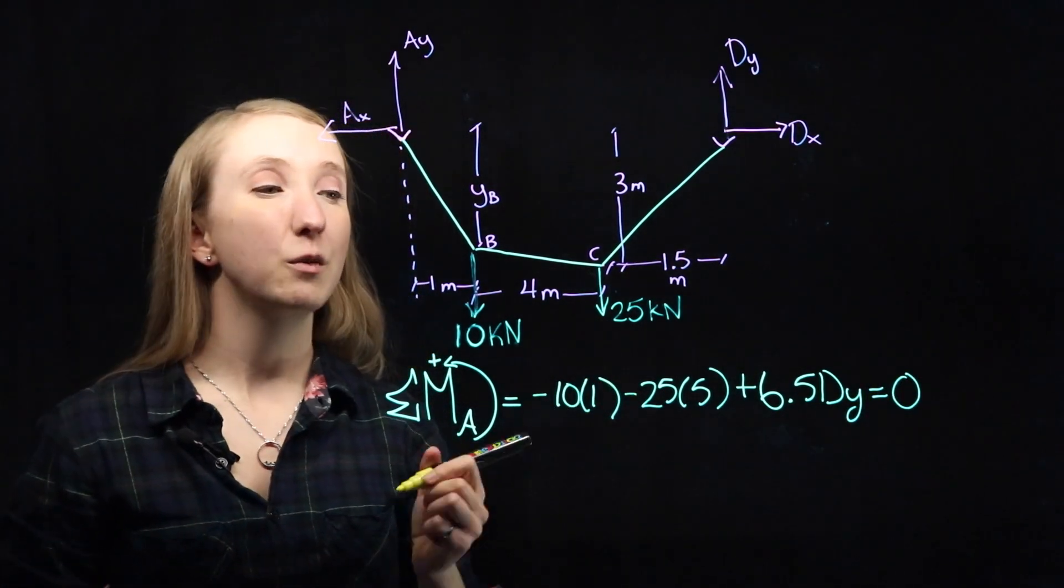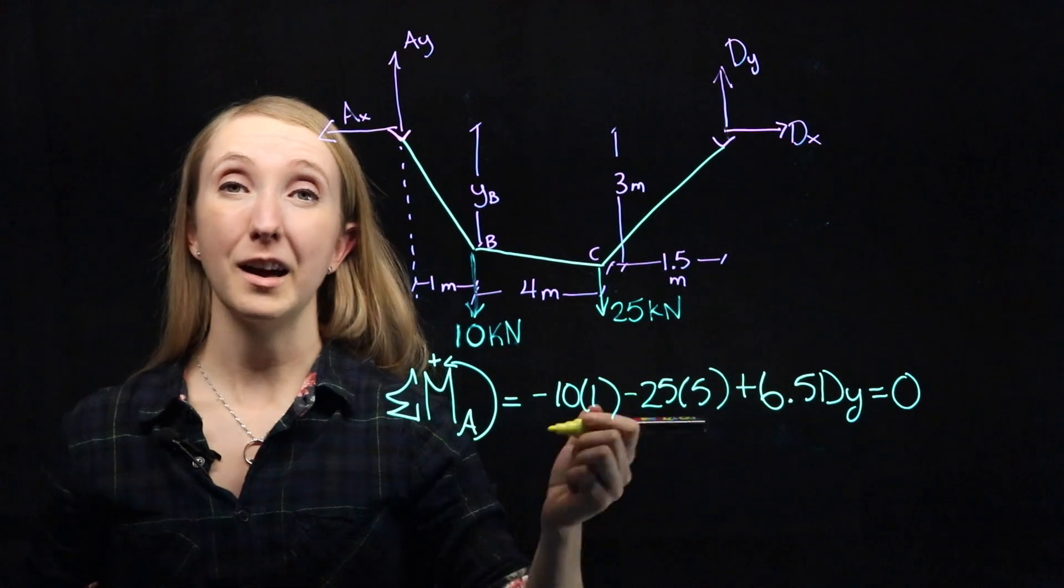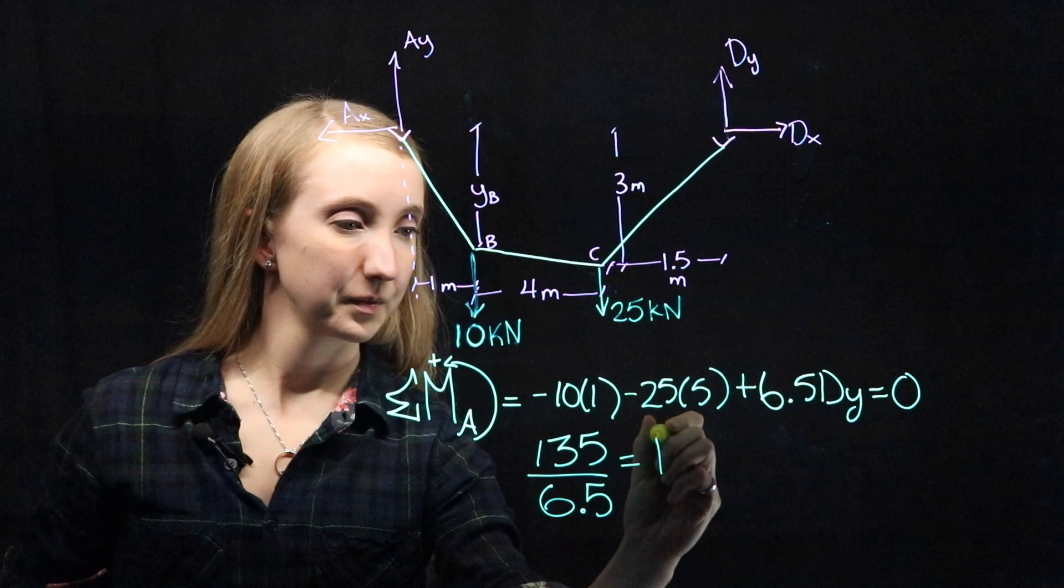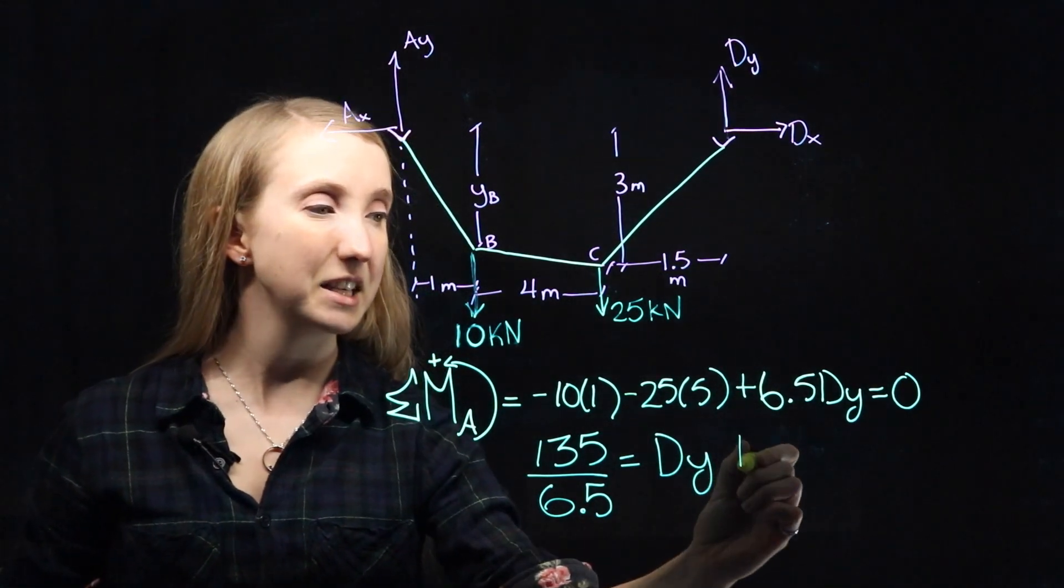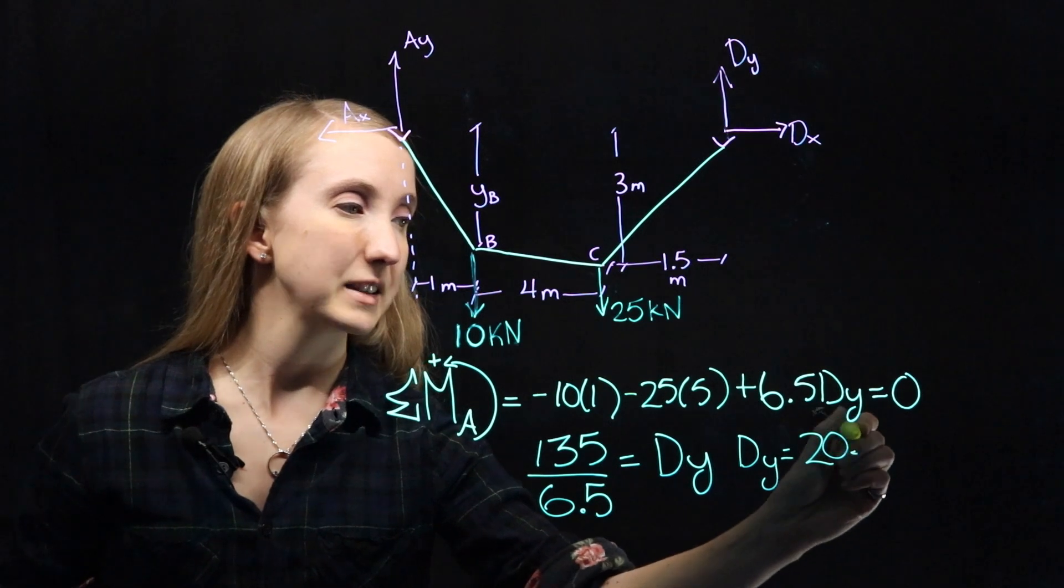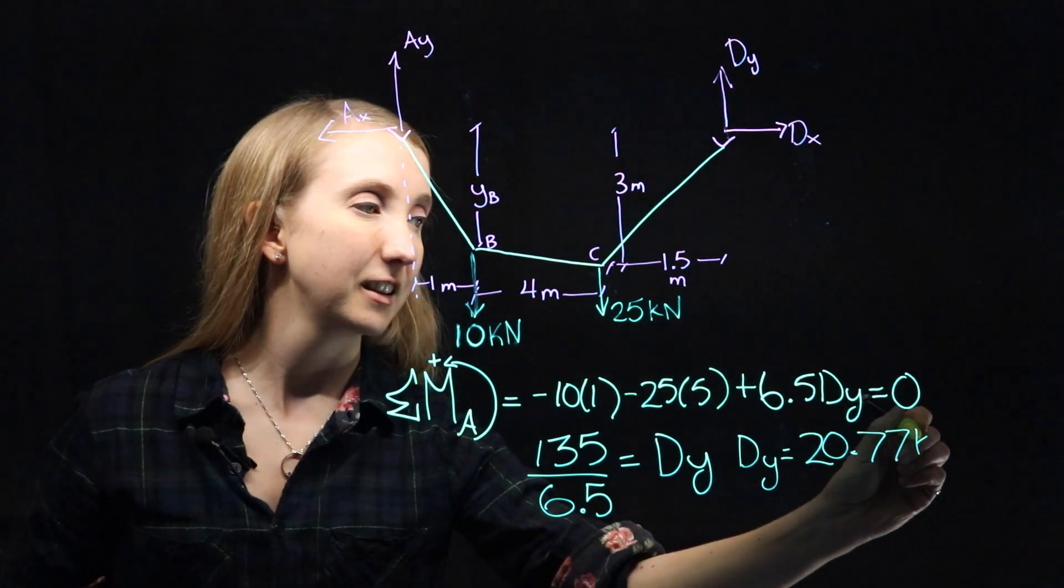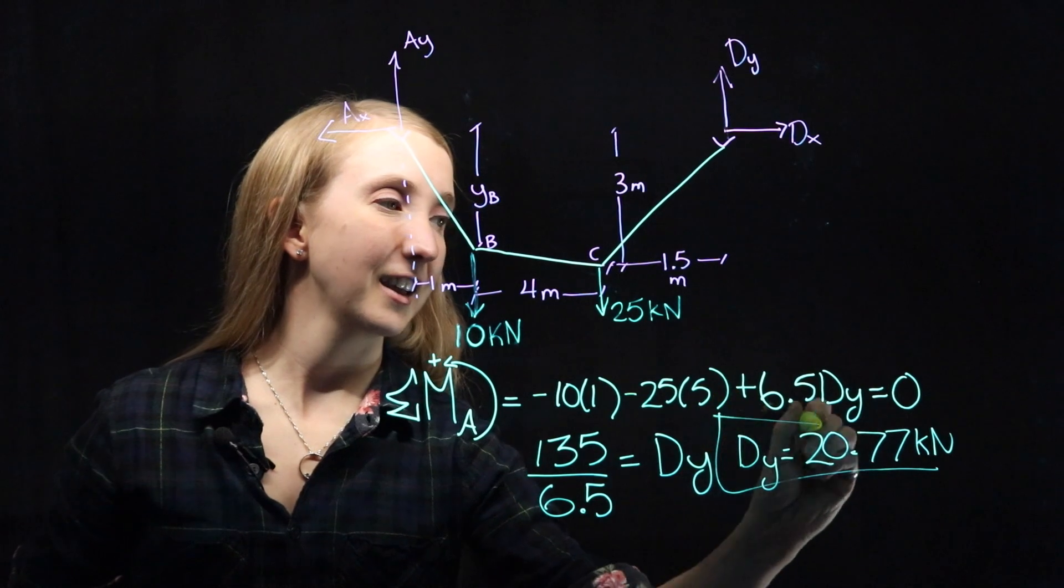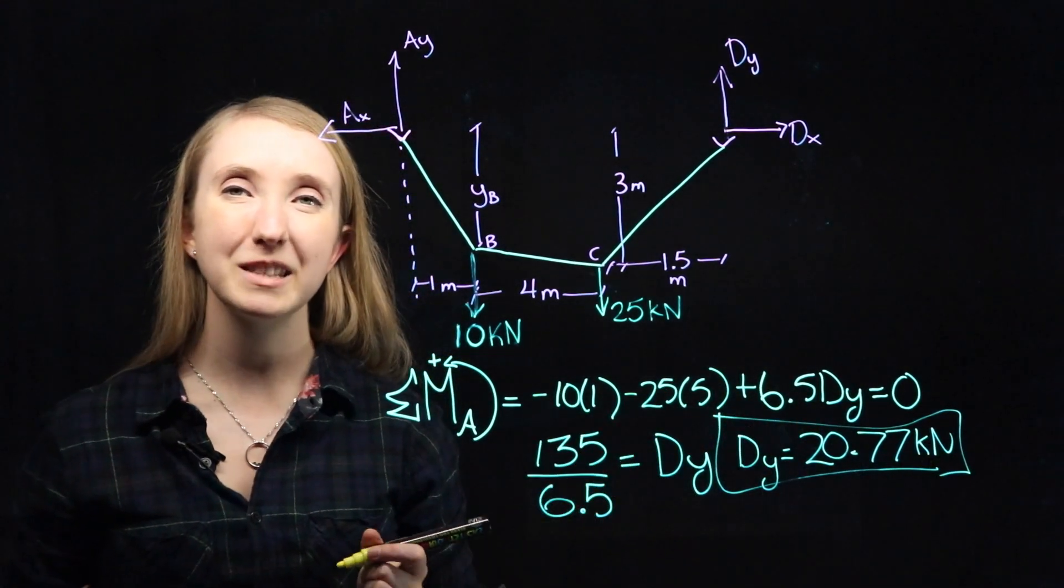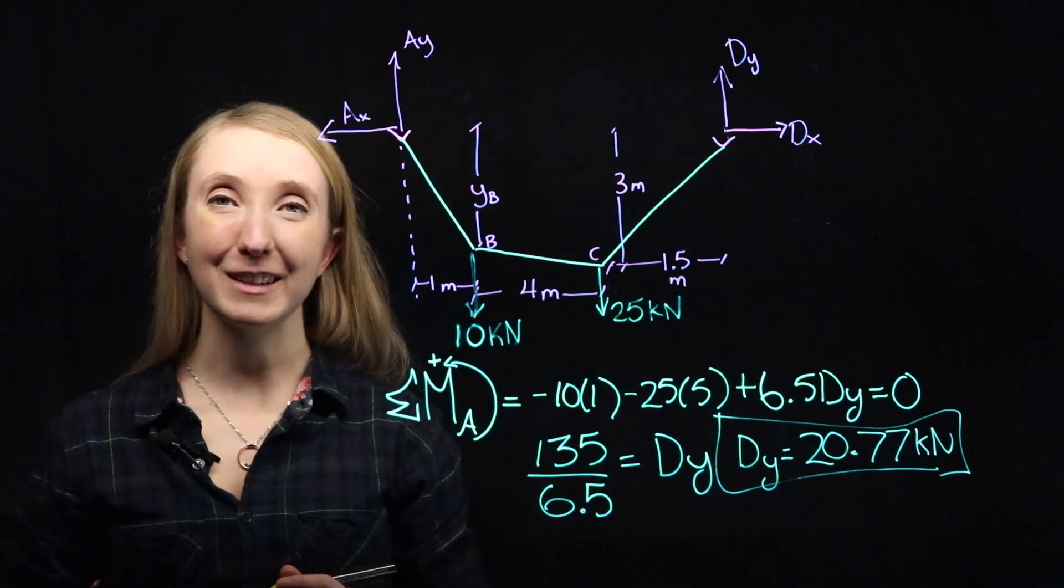Now we have one equation with one unknown. So we can solve for DY. And we get that DY is equal to 20.77 kilonewtons. And I always like to put boxes around our answers so it's easy to identify what we've already solved for.